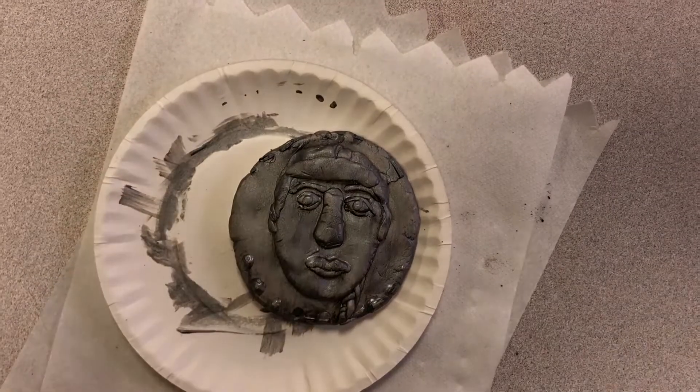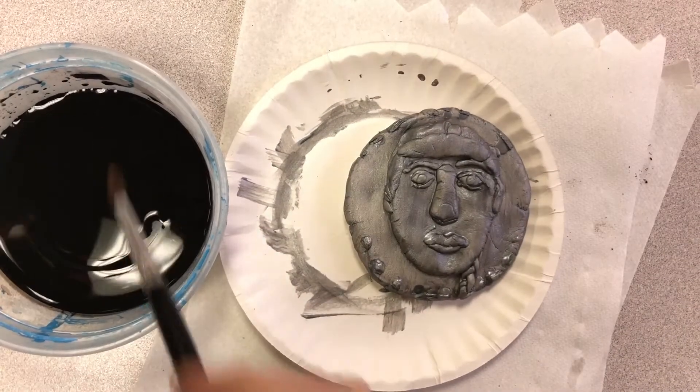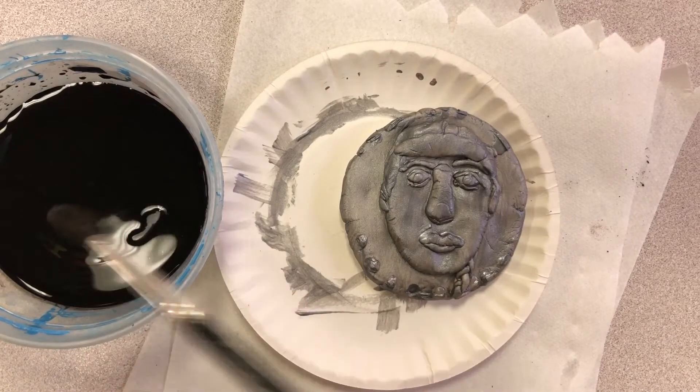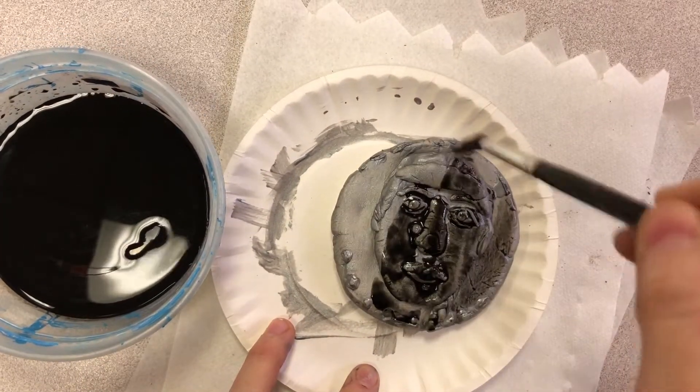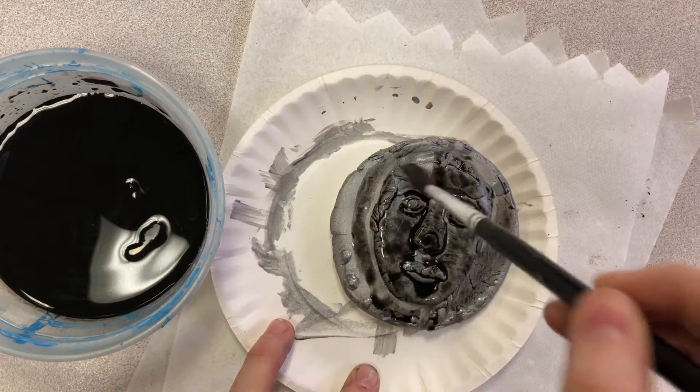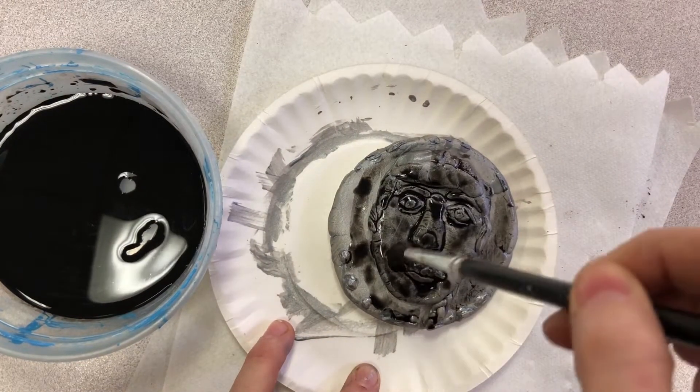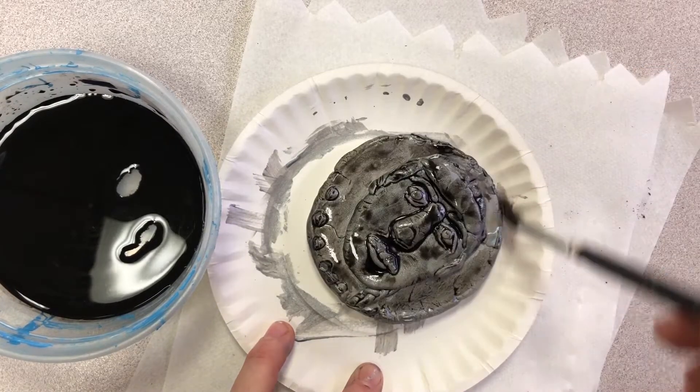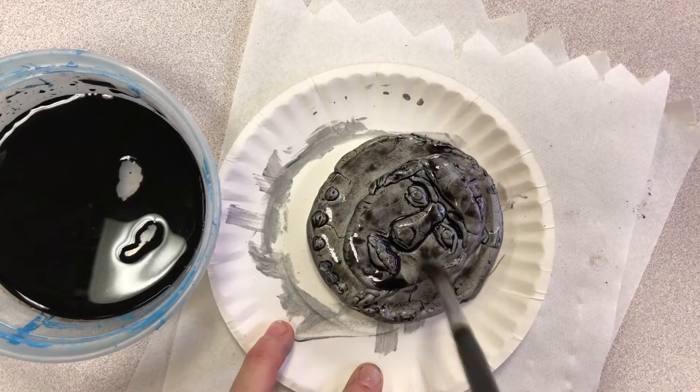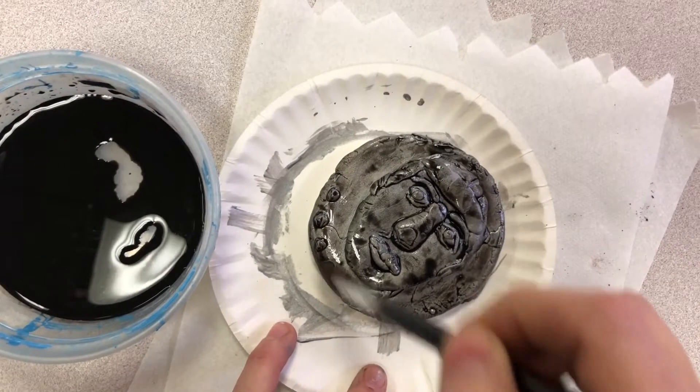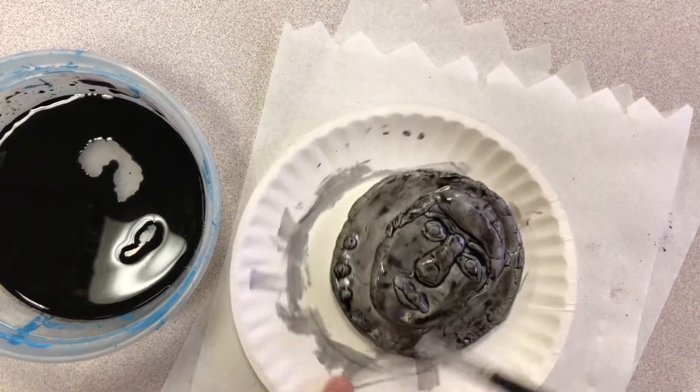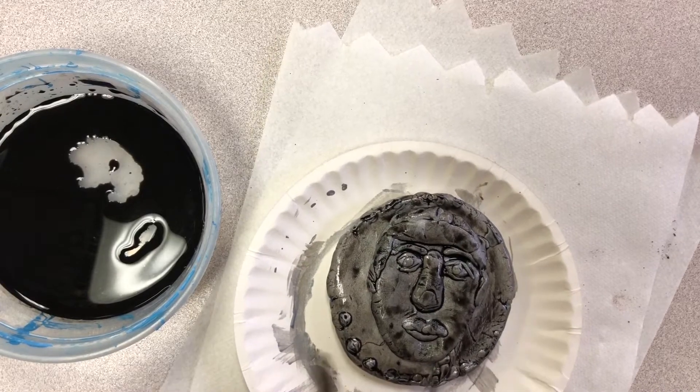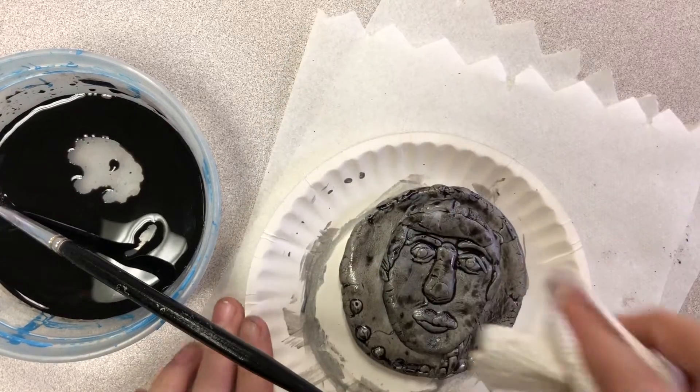All right, so now I have some watered-down India ink and a nice fluffy brush, and I'm gonna take that and just kind of paint it on the surface. I do the watered-down because I don't want it to stain the entire surface. And what you're gonna see happen here is the black is gonna stay blacker in anywhere where there's cracks, and that'll give it that look of a patina.